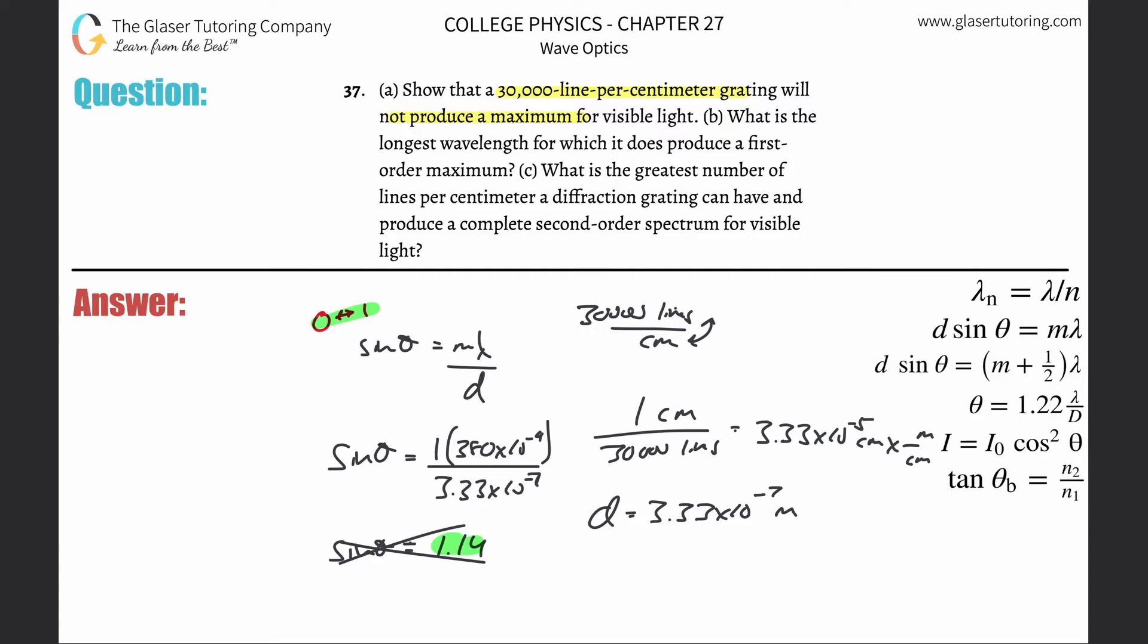So it says letter B. What is the longest wavelength for which it does produce a first order maximum? Now, think about what we just did. So we're going to take this same equation here. But what I know now is I'm going to solve this for lambda. Take this same equation. Solve this for lambda now.